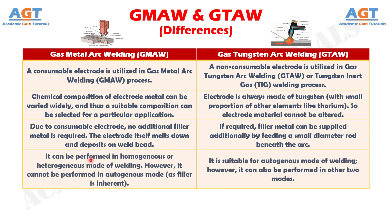Number four: gas metal arc welding can be performed in homogeneous or heterogeneous mode of welding; however, it cannot be performed in autogenous mode as filler is inherent. Whereas gas tungsten arc welding is suitable for autogenous mode of welding; however, it can also be performed in the other two modes.